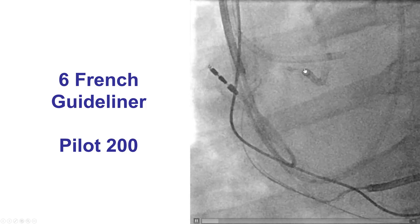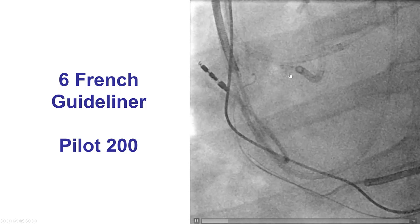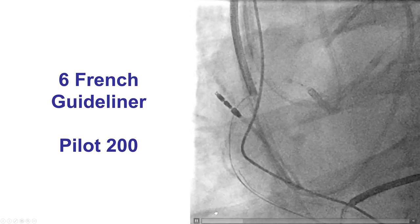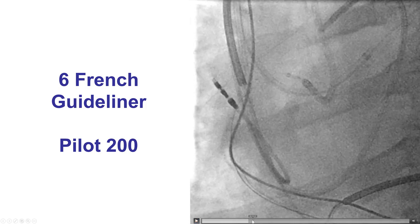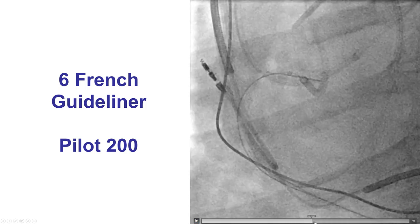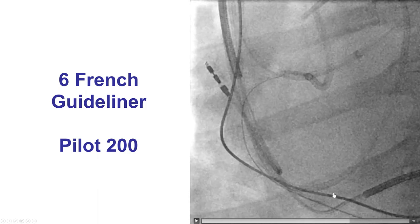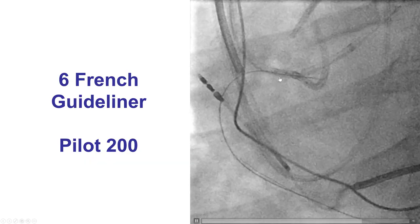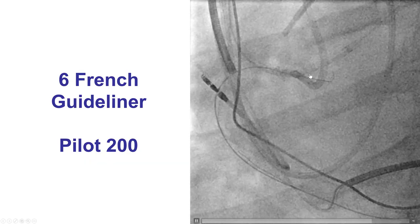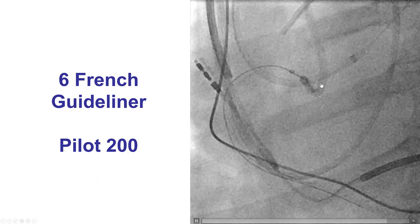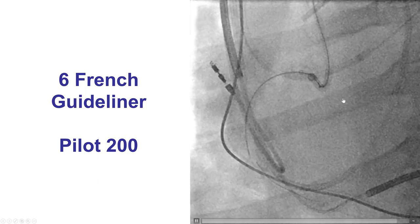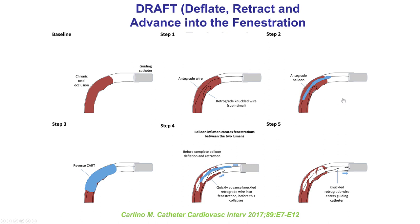In our case, a 6 French guide liner was inserted into the proximal right coronary artery, and a Pilot 200 guide wire was advanced. After inflating the balloon in the proximal right coronary, deflating, and pulling it back into the guide extension, the guide wire eventually popped into the antegrade guide catheter extension. This illustrates the so-called DRAFT technique — Deflate, Retract, and Advance into the Fenestration.